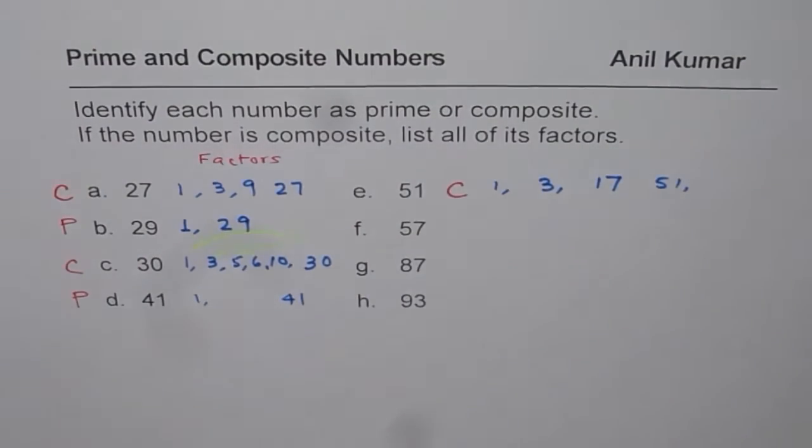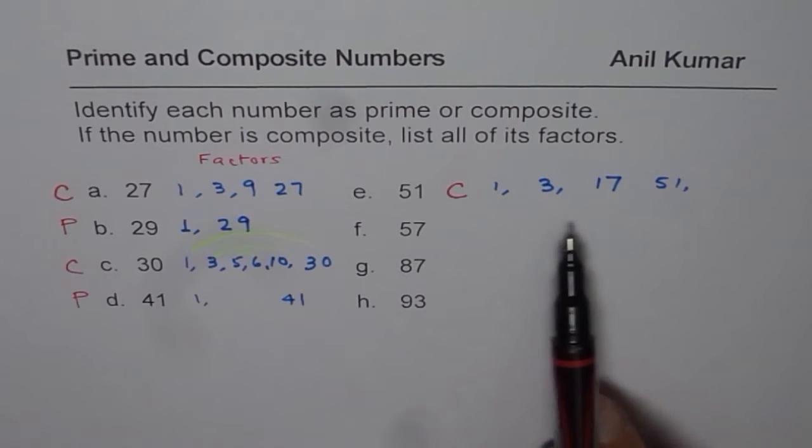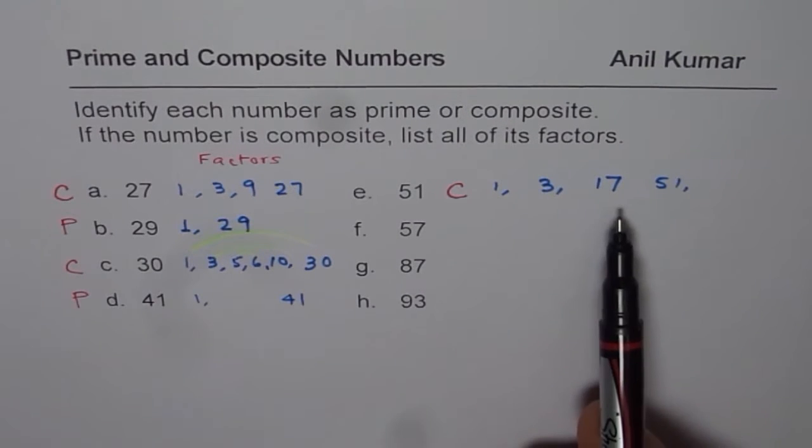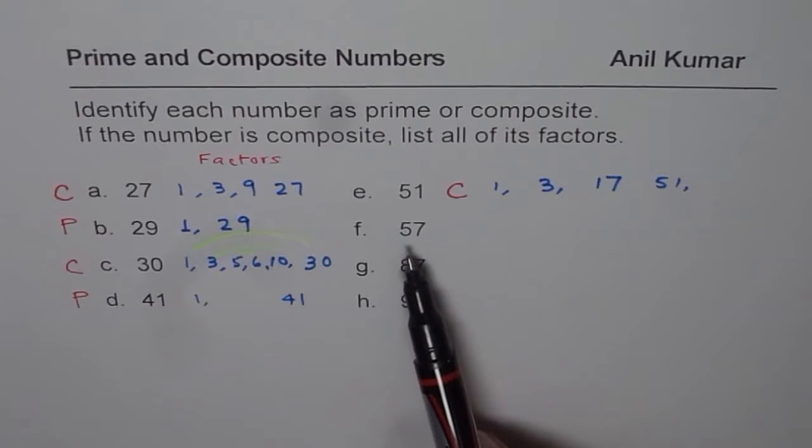Do you see that? So if you have made a mistake, you now know the trick. What you need to do is, you need to find factors using divisibility rules.